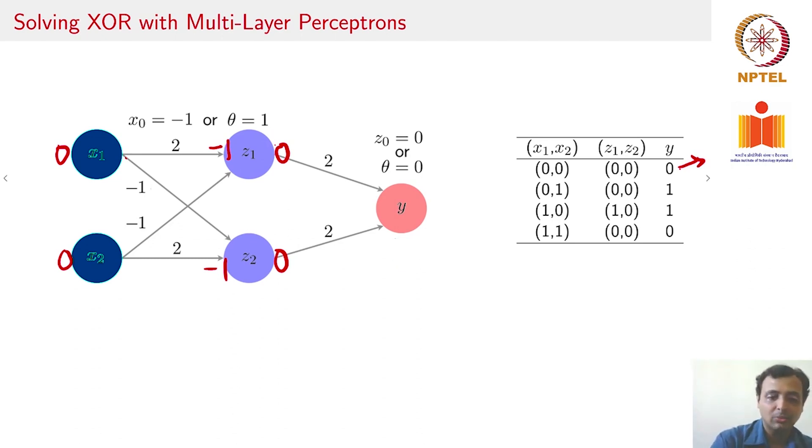Let us take the second case now and see how that works out. Consider your input to be 0 and 1. Z1 is going to get 0 and minus 1 and minus 1, which would be minus 2, so the output would be 0. Z2 would get 0 and 2 and minus 1, which would be 1, so the output of Z2 is 1. You get an output of 2 here, which corresponds to 1.